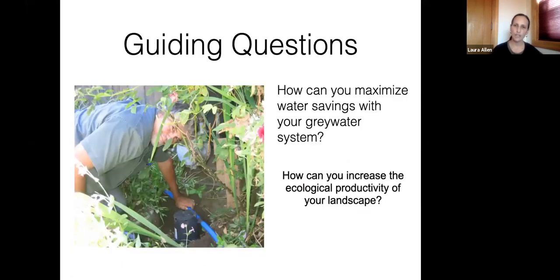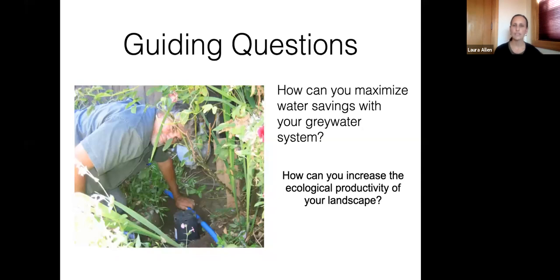With graywater, there are two key questions: How can you maximize your water saving by replacing potable water irrigation with graywater? And how can you increase the ecological productivity of your landscape? Sometimes a graywater system installation is a great time to make landscape changes. Just think about what you can do with that source of water to make your yard beneficial to you as well as the environment.